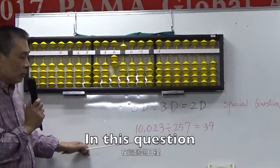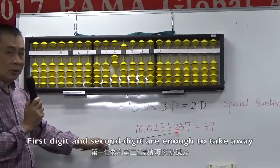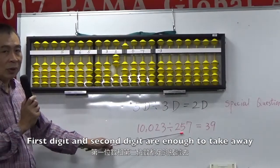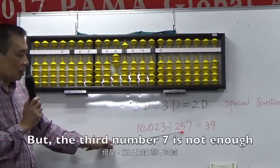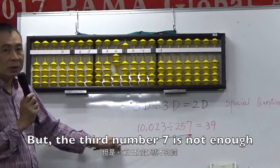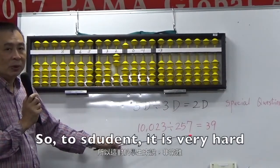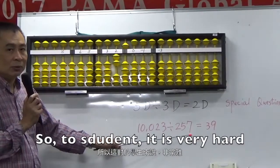In this question, 1-digit and 2-digit are enough to take away. But the 7, the third number, not enough. So, it's very hard to student.